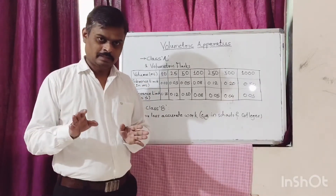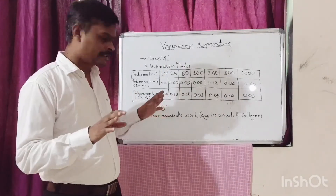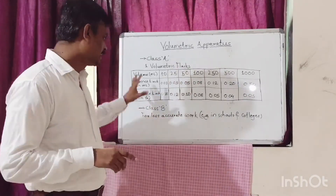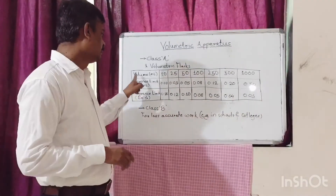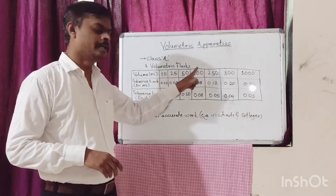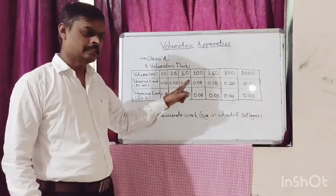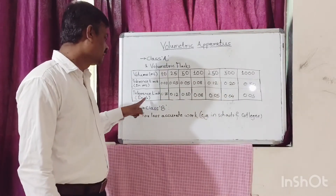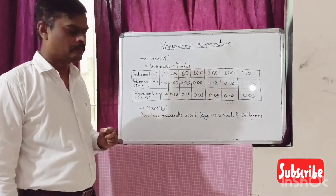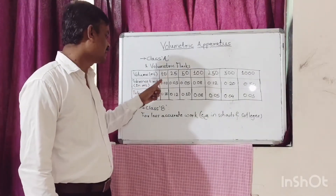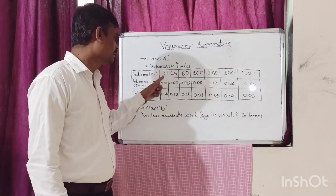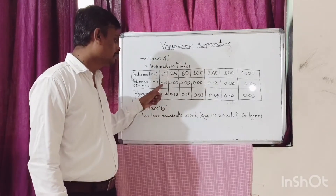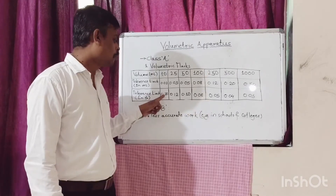For example, we have taken the tolerance limit for volumetric flasks from USP 31. This is the table for volumetric flasks. The first row contains different sizes of volumetric flasks, the second row contains the tolerance limit in ml, and the third row contains the tolerance limit in percentage. For example, for a 10 ml volumetric flask, the tolerance limit for Class A is plus or minus 0.02 ml. If you convert 0.02 ml into percentage, the tolerance limit will be 0.20%.